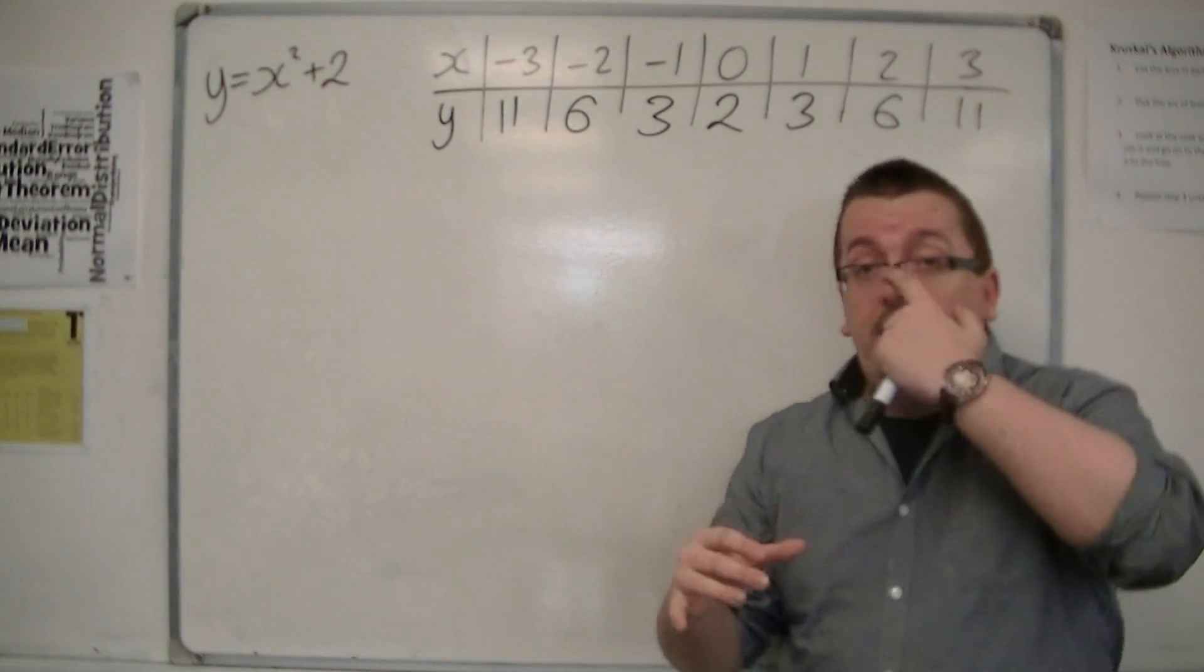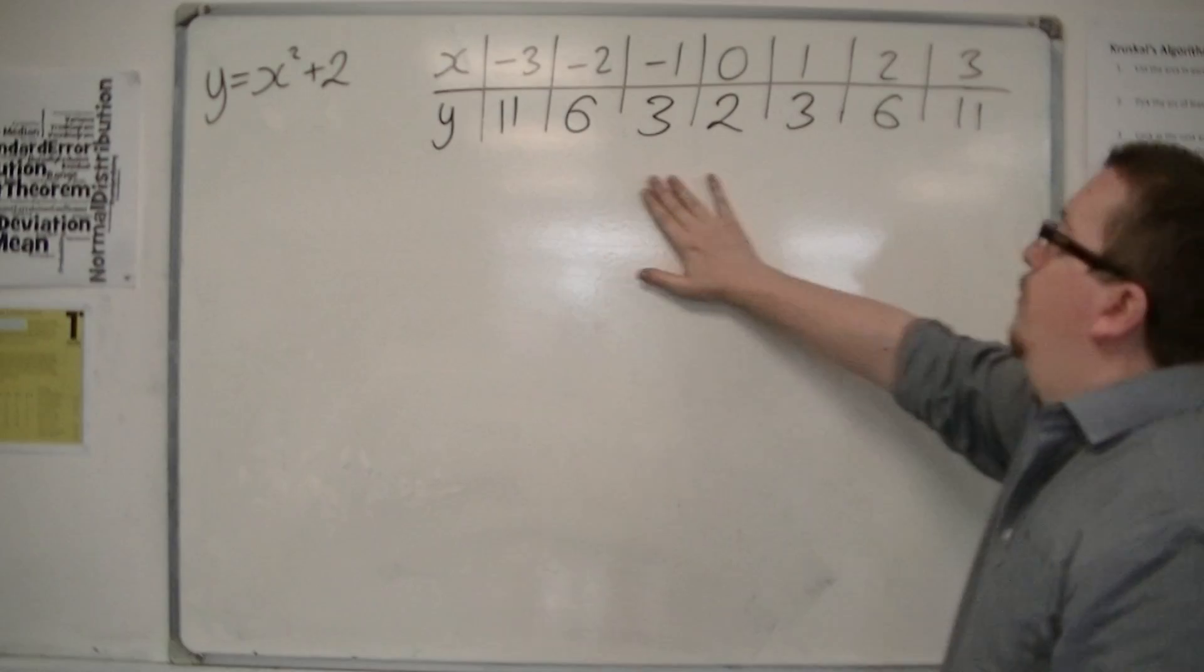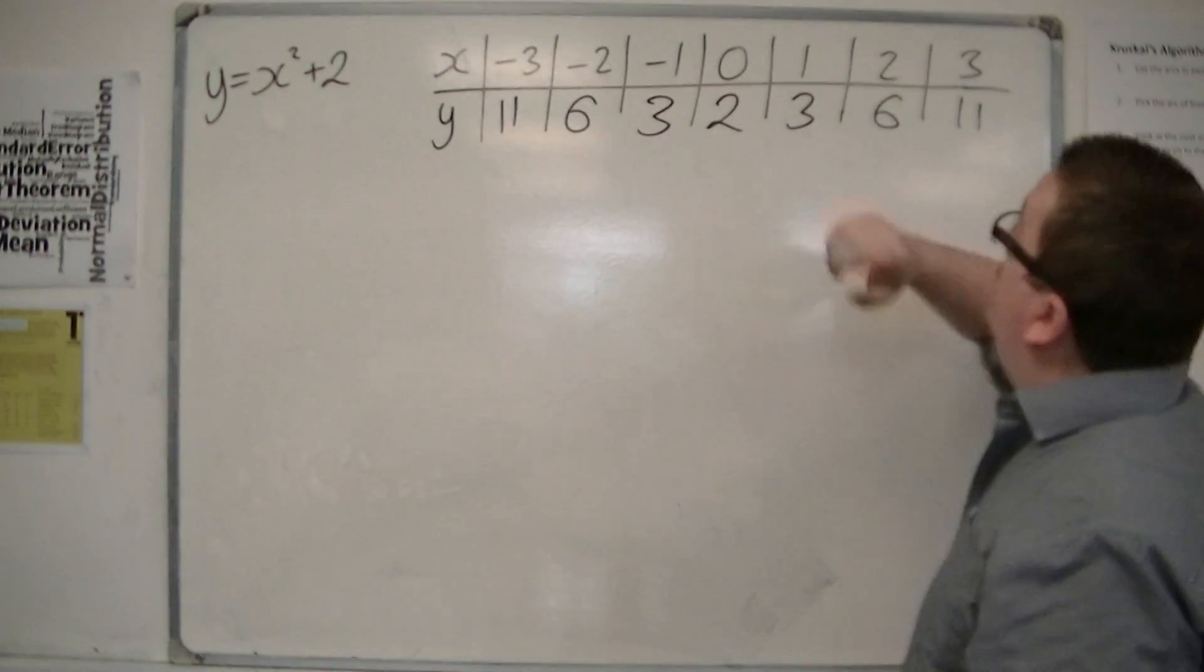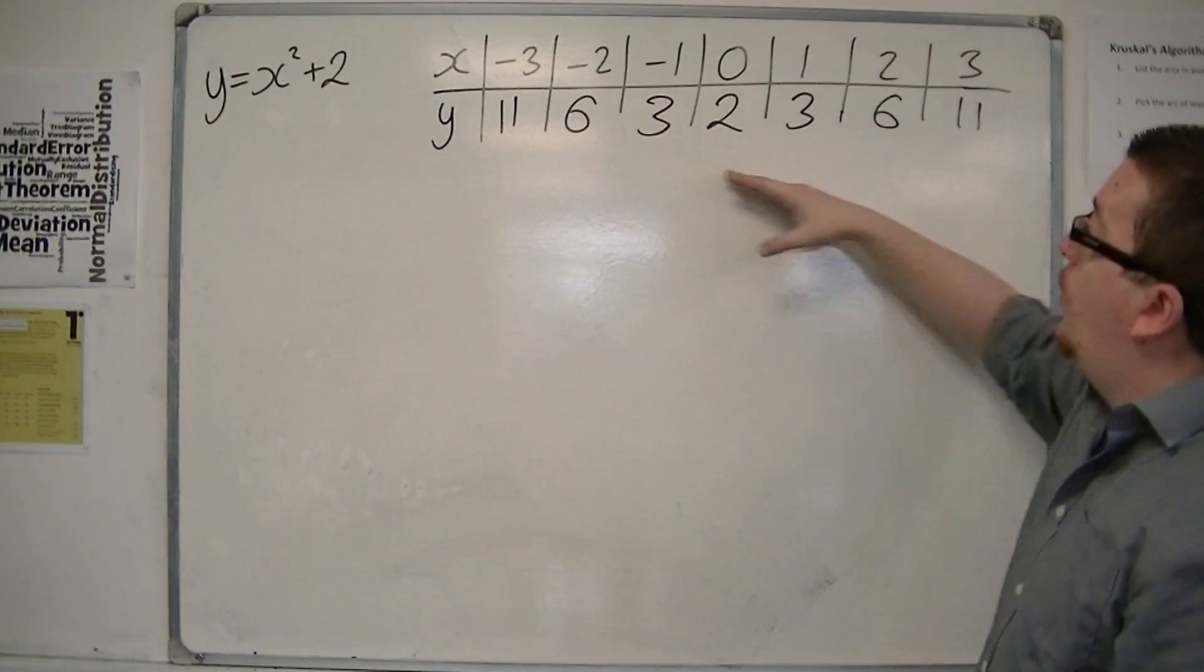And what I've done is I've put together a table of values for the x and y. So x is going from minus 3 to 3, and these would be the y coordinates.